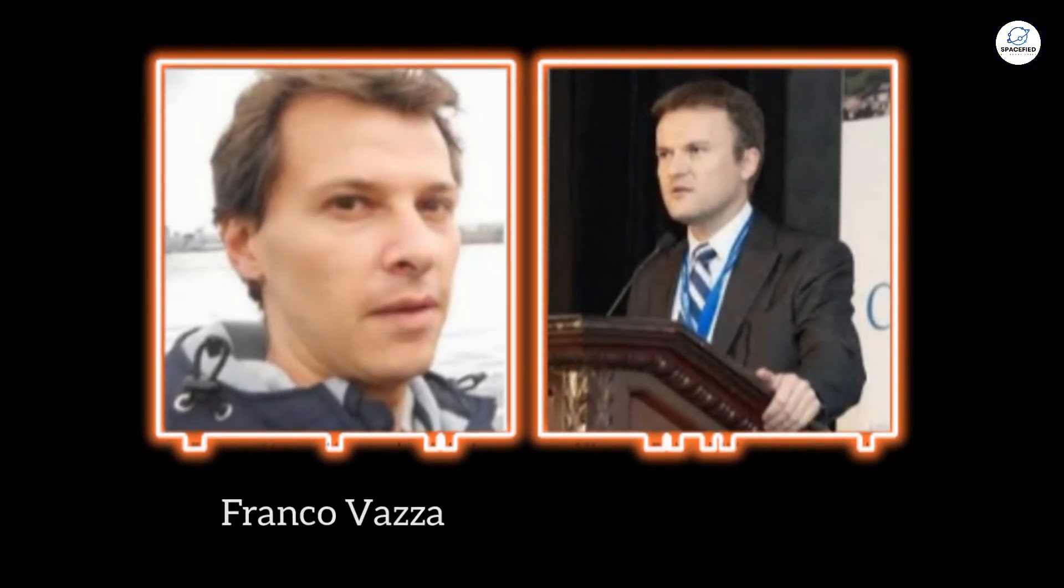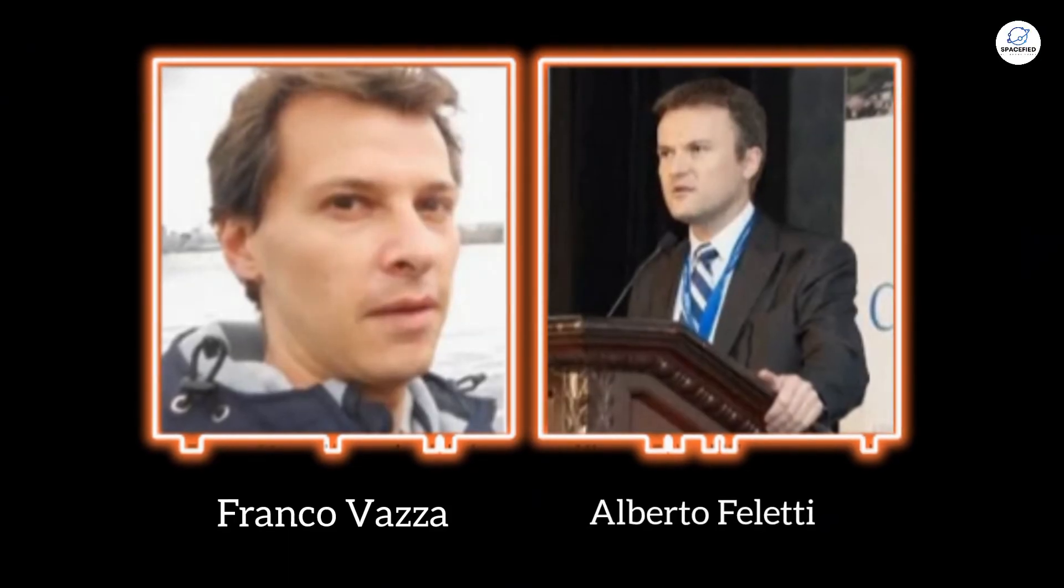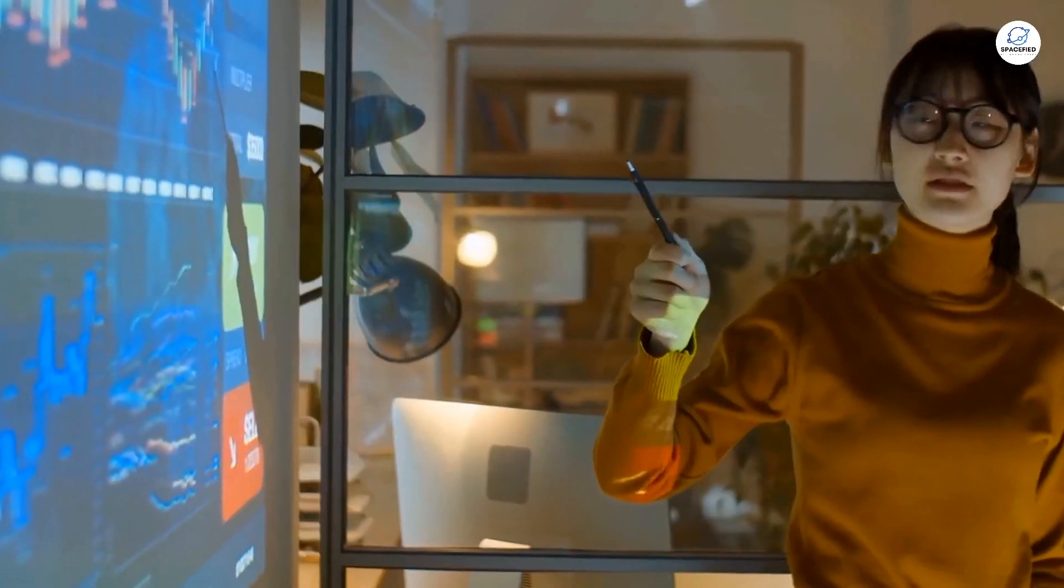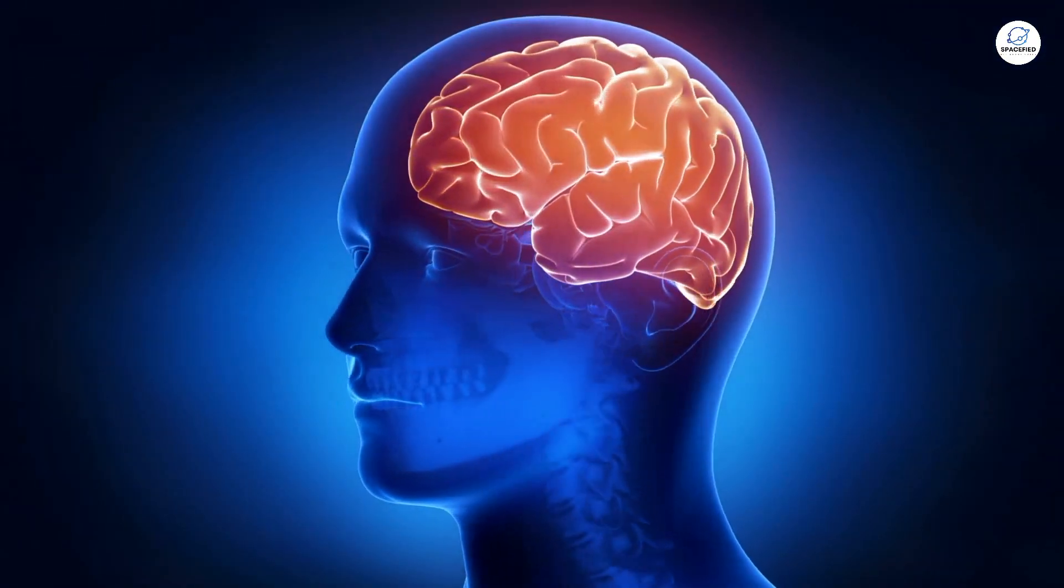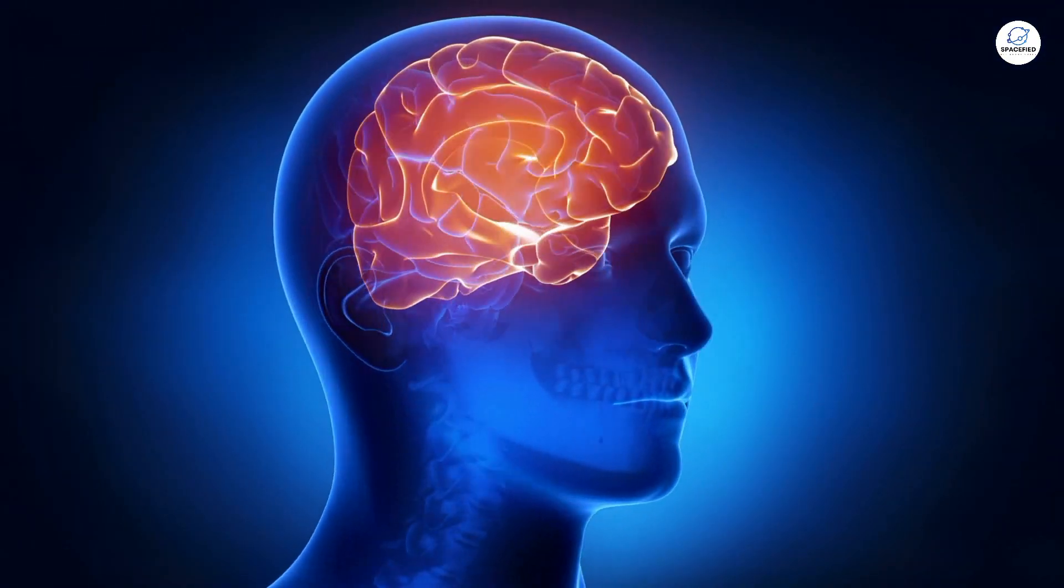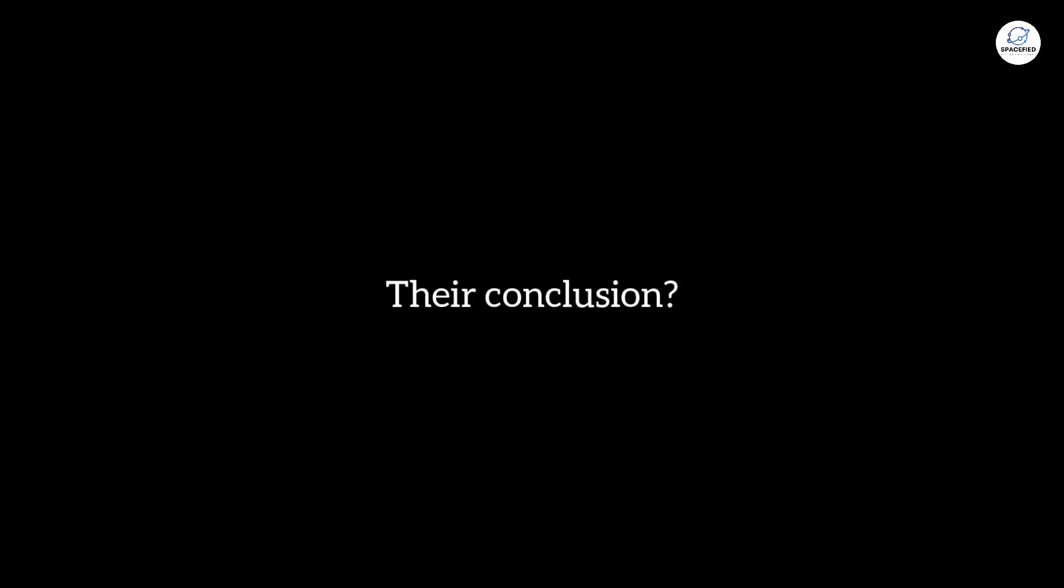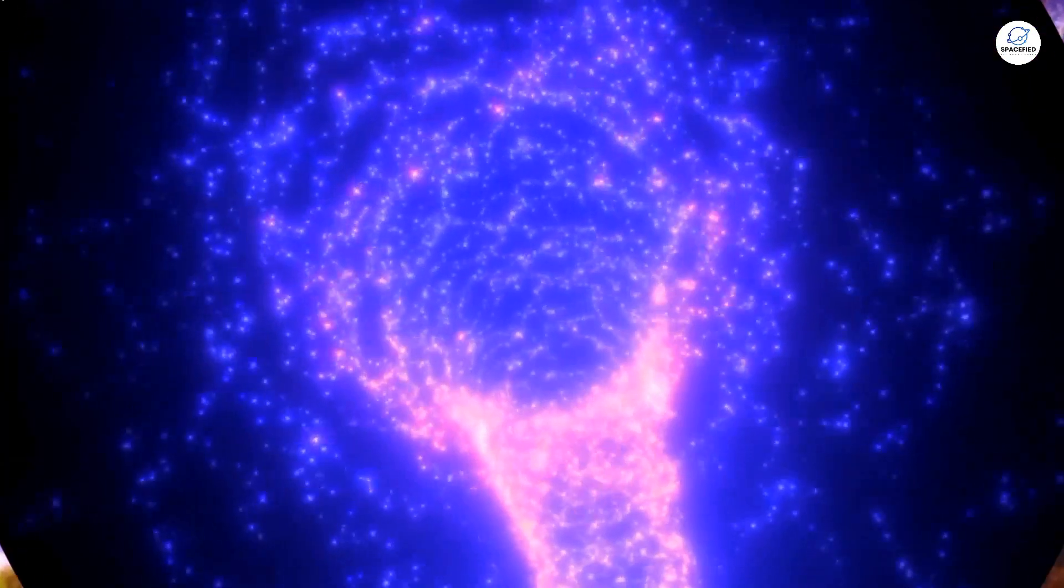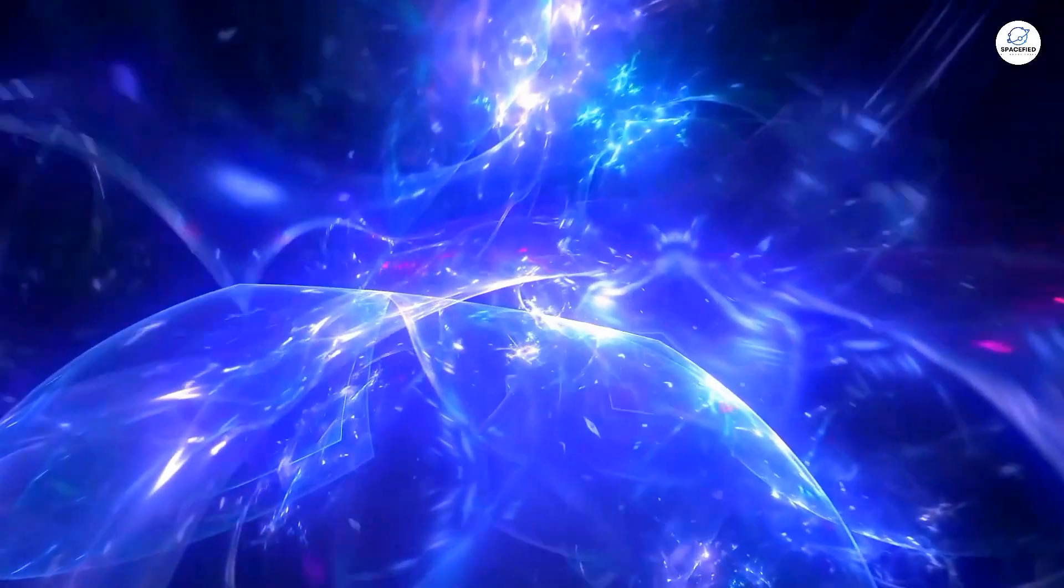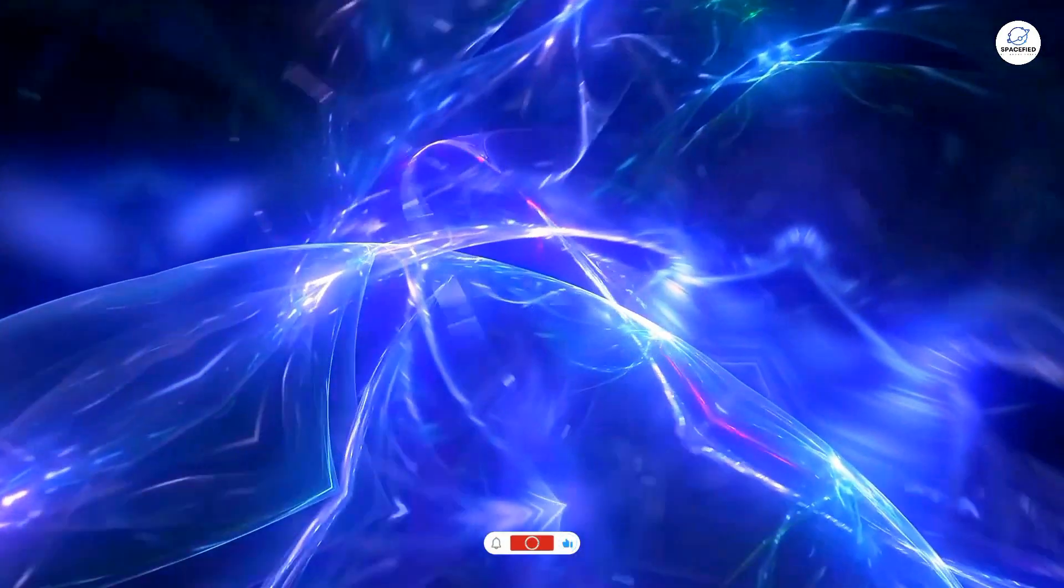Astrophysicists Franco Vazza and neuroscientist Alberto Filetti conducted a fascinating study comparing the cosmic web and the brain's connectome, the map of neural connections. Their conclusion? Despite the enormous difference in scale, the two systems exhibit nearly identical levels of complexity and organization.